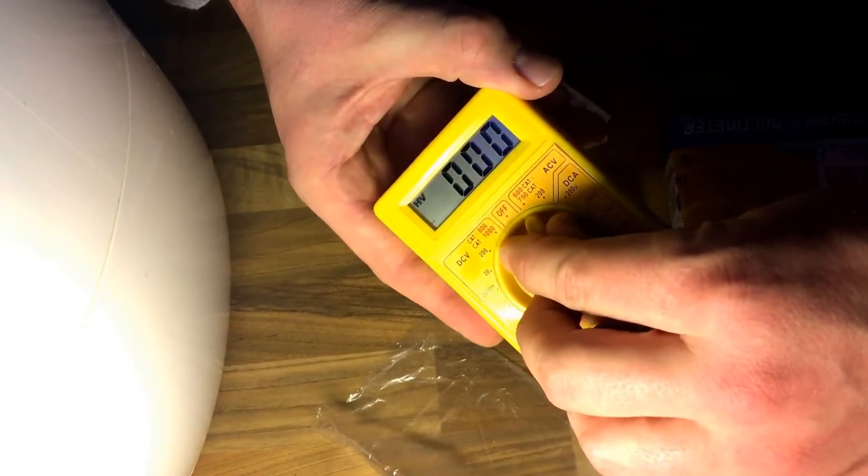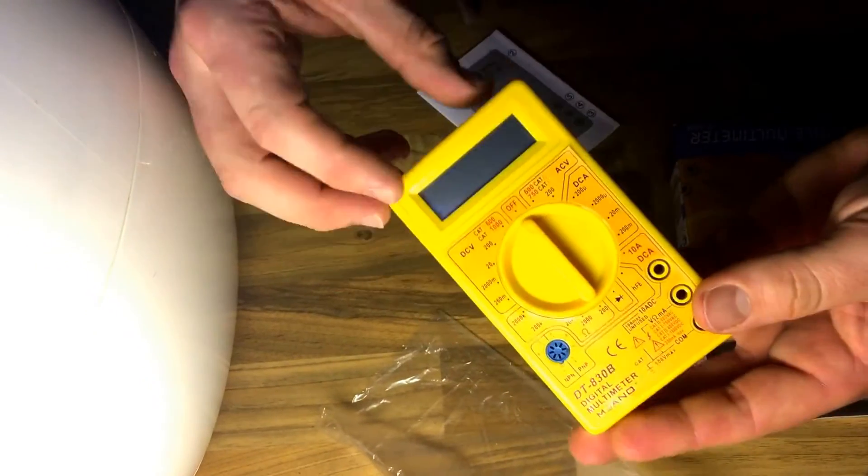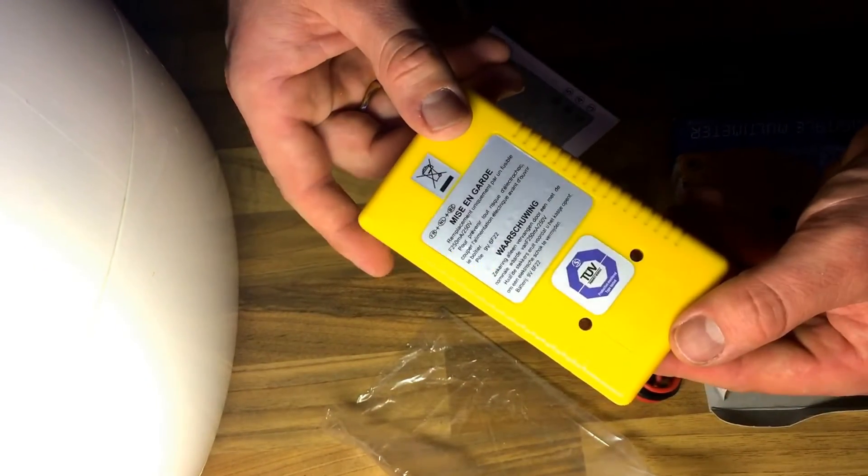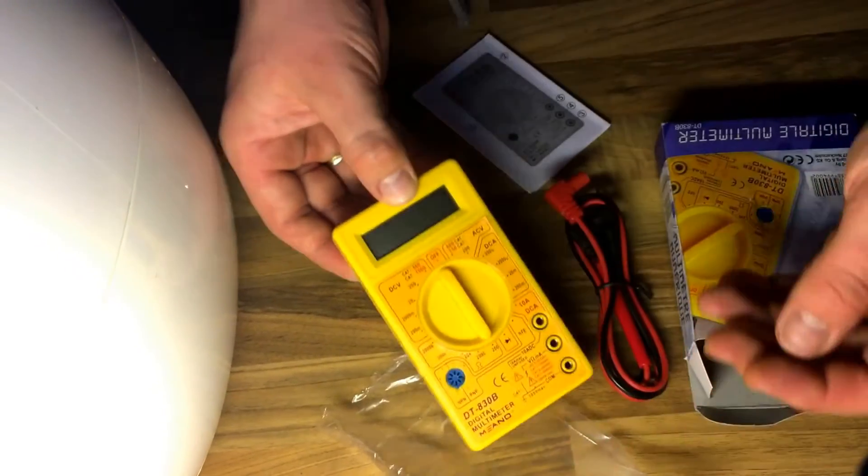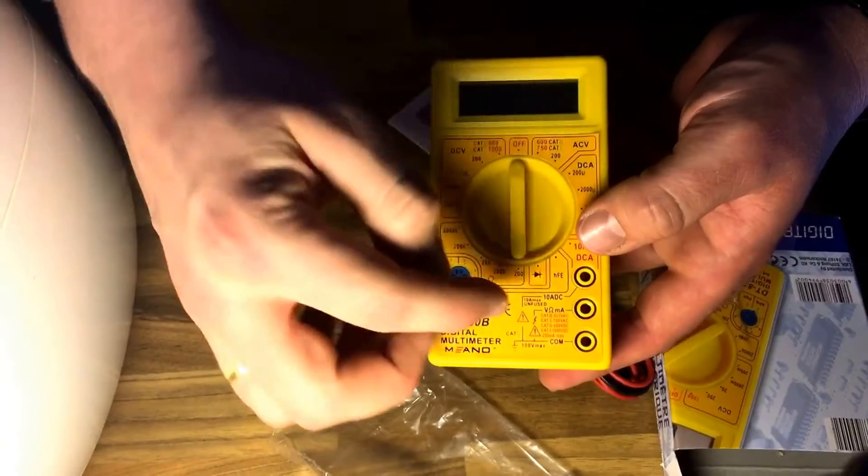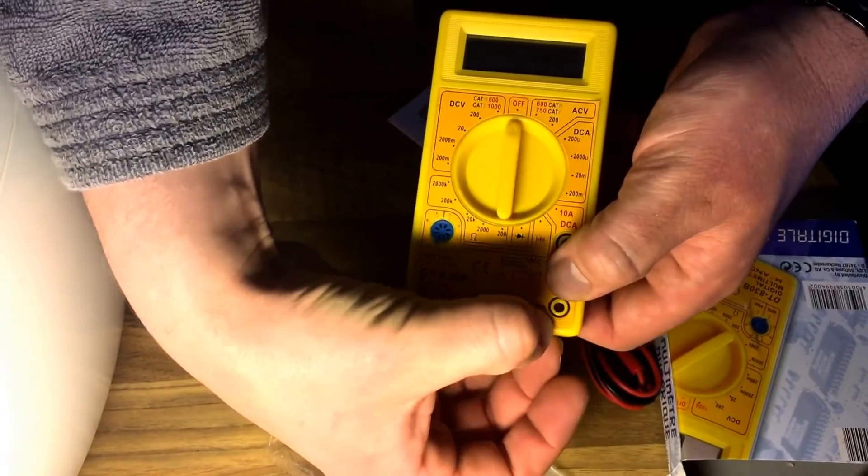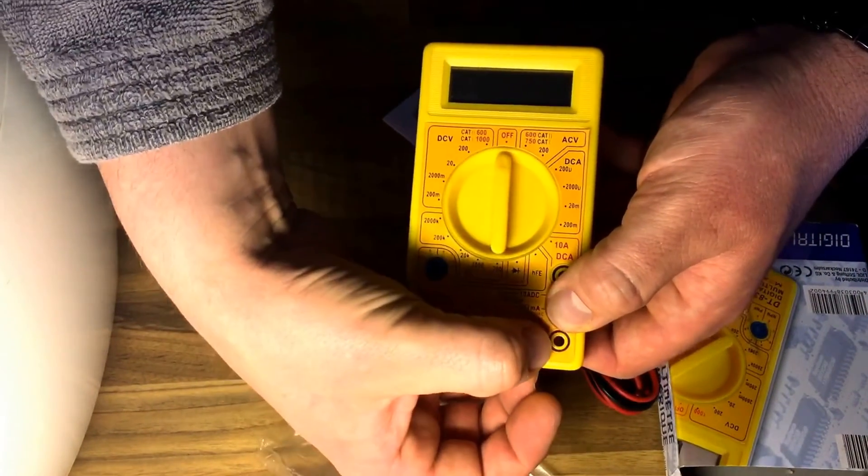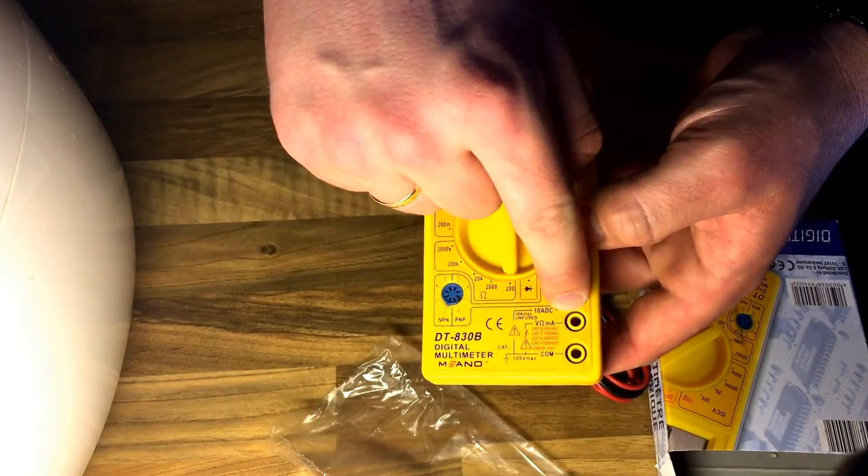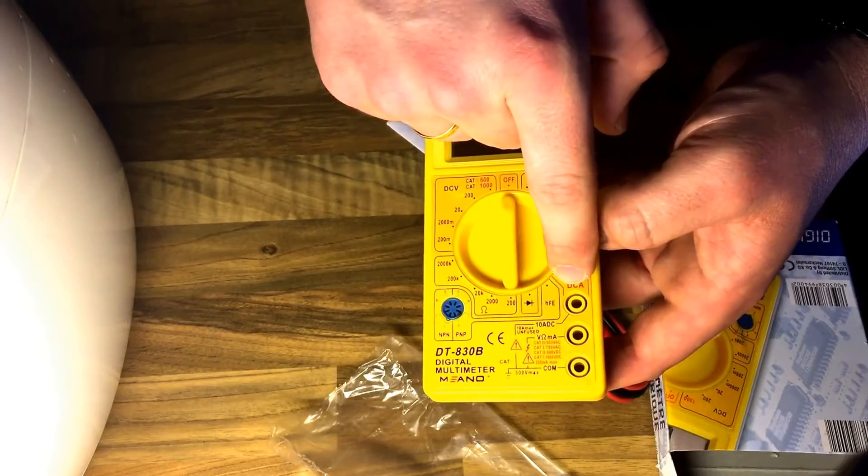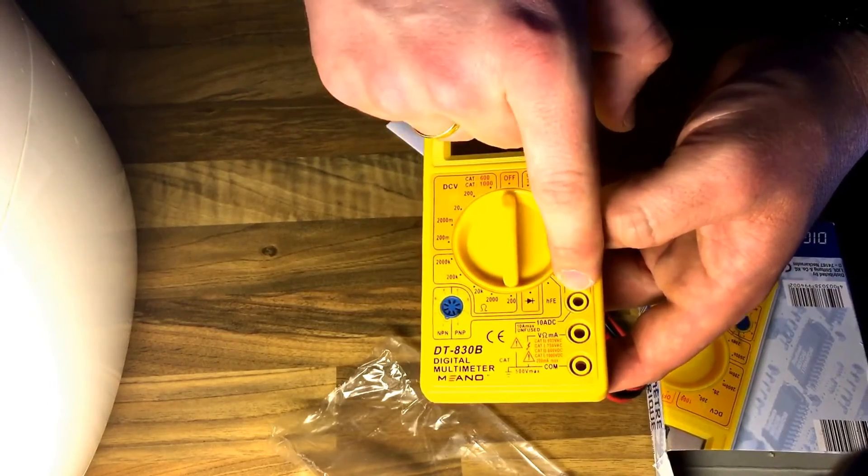Inside the multimeter is a battery and this is great. Wow, wow, wow. We have to lock in the black wire in the COM slot and the red wire in that, or this for higher range.